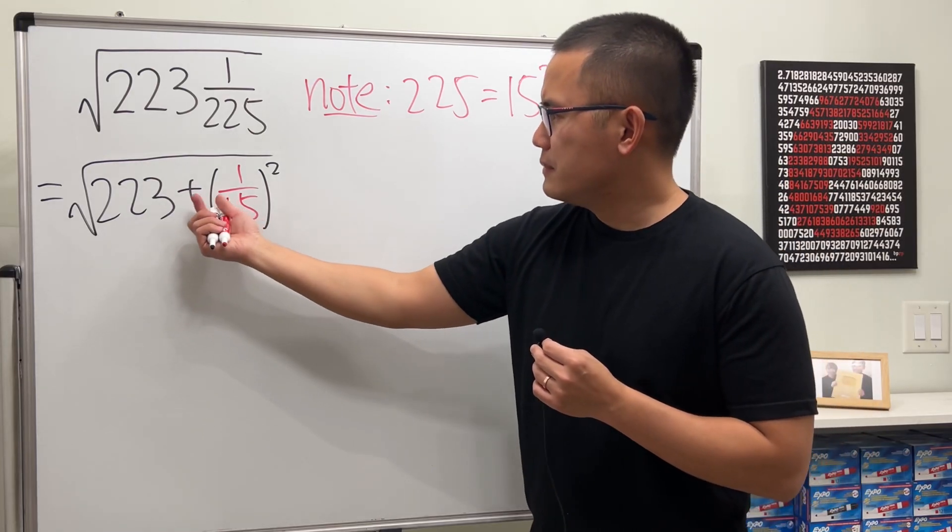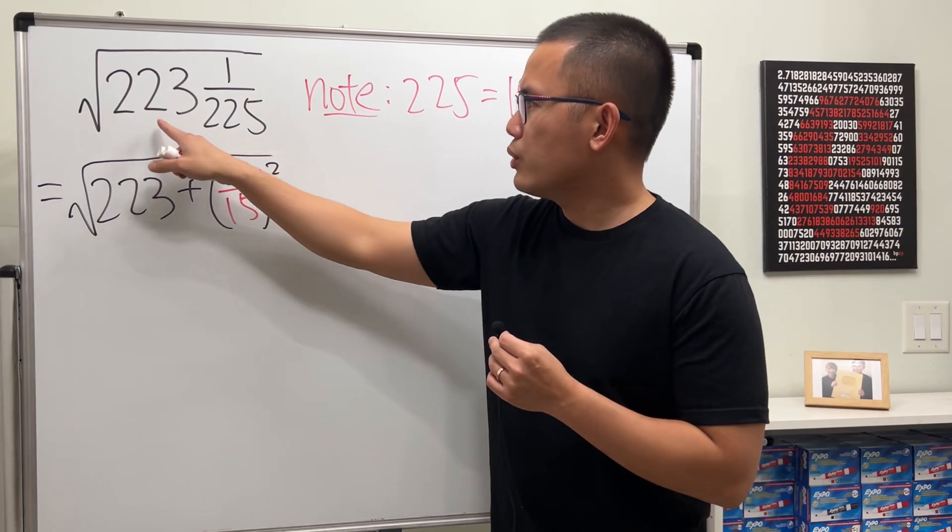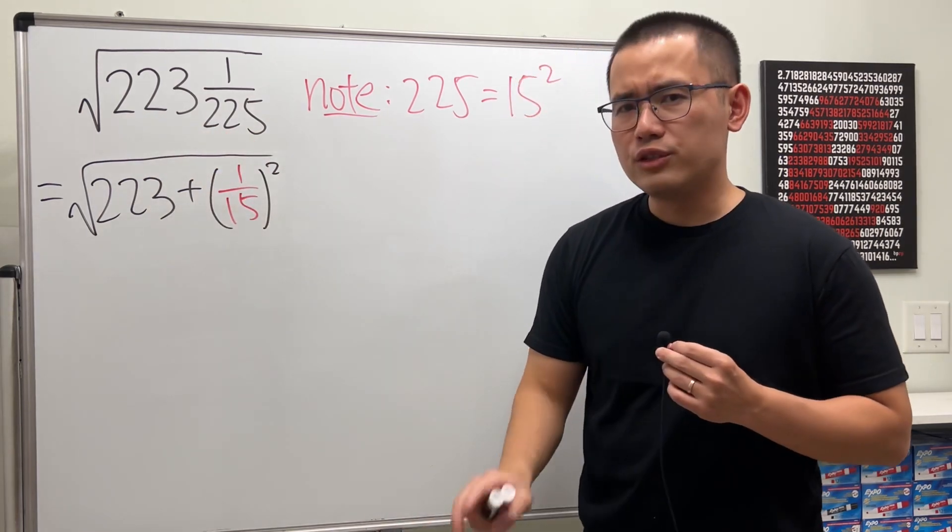Now, we have something square at the end, right? And another thing is that notice, 223 and 225, they are just off by 2.